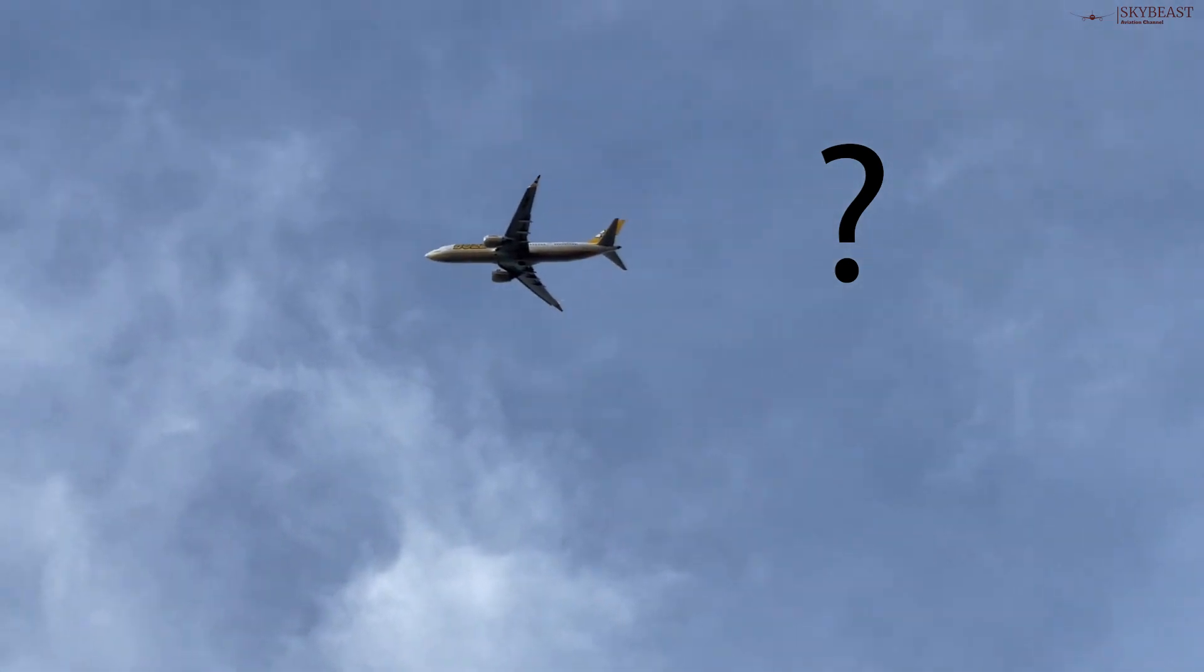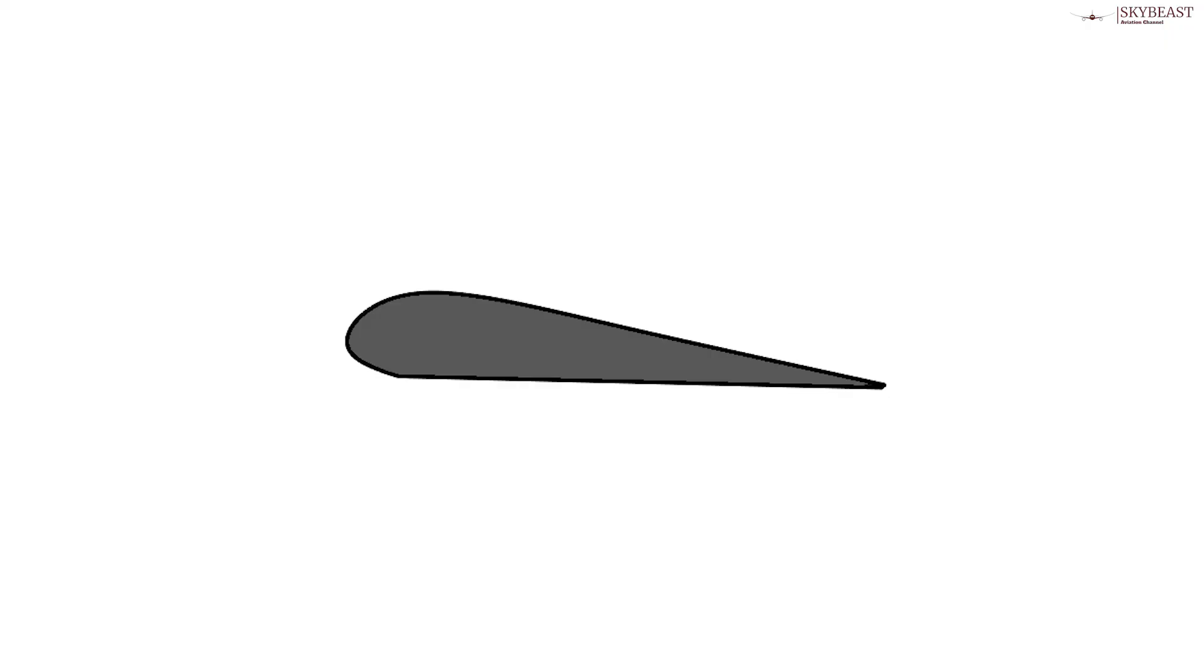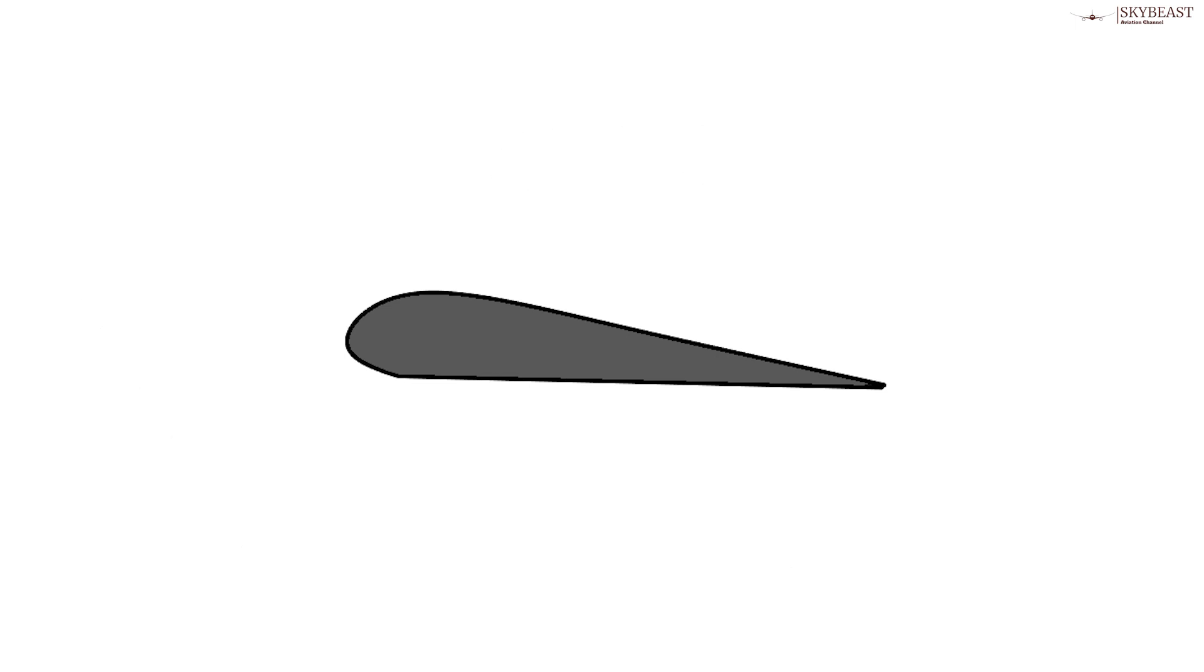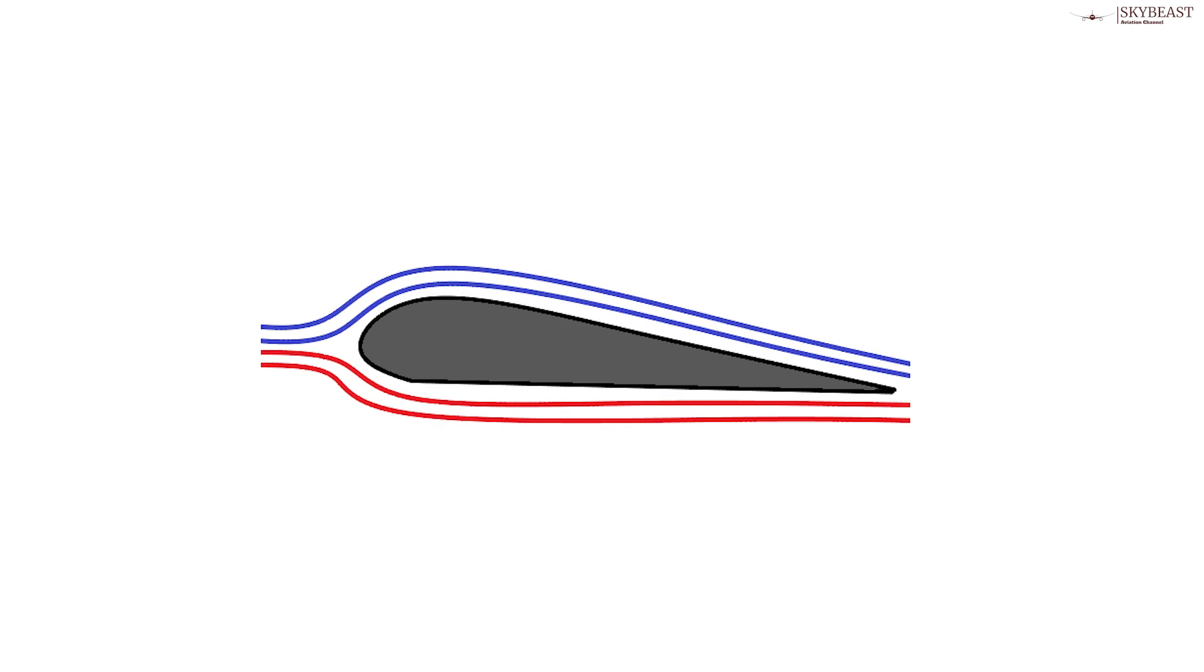Most airplane wings have a curved upper surface and a flatter lower surface, making a cross-sectional shape called an airfoil. In a lot of science books and webpages, you'll read an incorrect explanation of how an airfoil like this generates lift. This theory says that when air rushes over the curved upper wing surface, it has to travel further than the air that passes underneath, so it has to go faster to cover more distance in the same time.